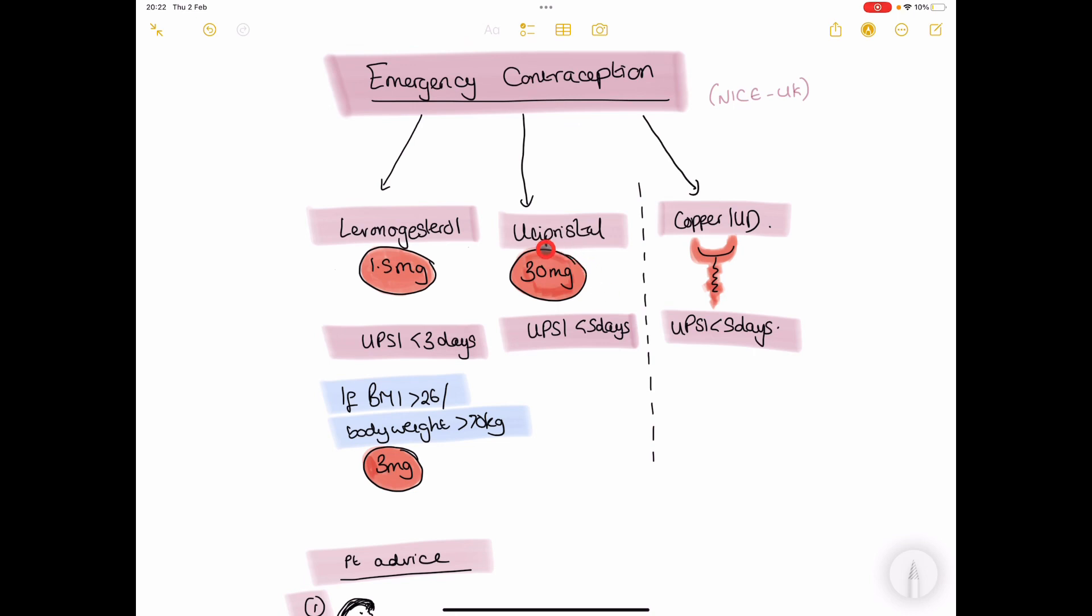Or we can offer them ulipristal, which is 30 mg stat dose. Or if either of these are not going to be effective, then the best emergency contraception, the most effective contraception as recommended by NICE, is a copper IUD.